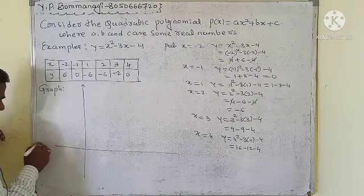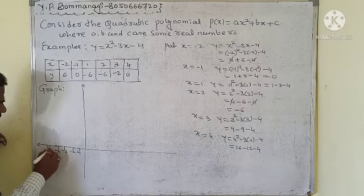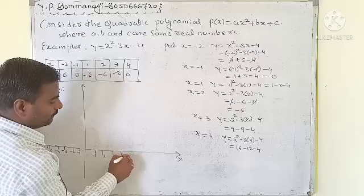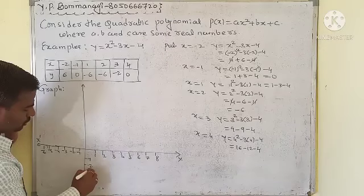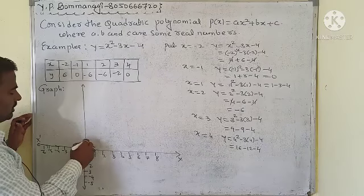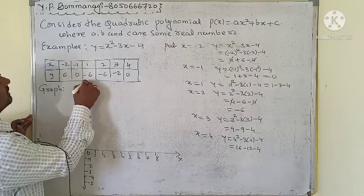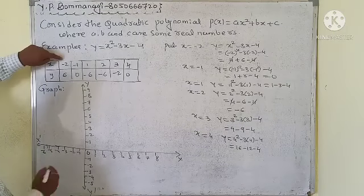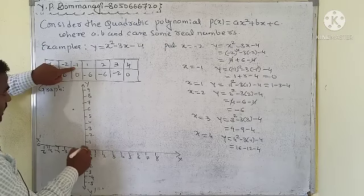On the graph, mark the axes: x-dash on the left going -1, -2, -3, -4, -5, -6, and x on the right going 1, 2, 3, 4, 5, 6, 7, 8. Similarly, y going upward and y-dash going downward, with origin at center point 0.